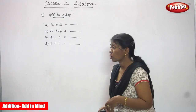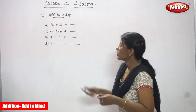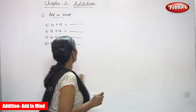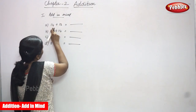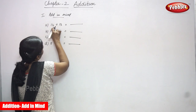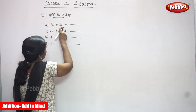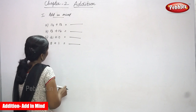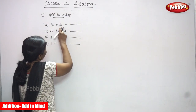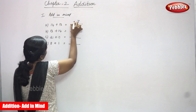Now we are going to solve the problems according to the rule. So 14 plus 13, adding in mind. First I have to add with ones. The number is 1 4. So 4 is in the ones place and 1 is in the tens place, and 3 is in the ones place and 1 is in the tens place.